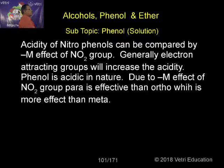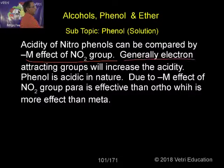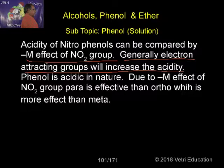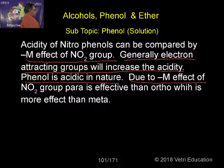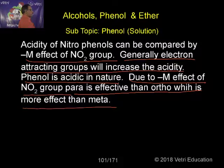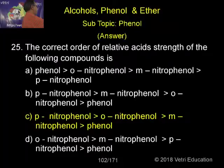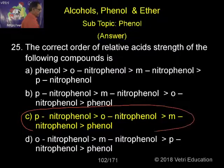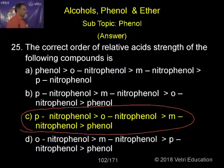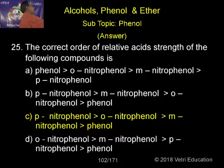The acidity of nitrophenol can be compared by the -M effect of the NO₂ group. Generally, electron-attracting groups will increase acidity. Para is more effective than ortho, which is more effective than meta. So the correct answer is C: para-nitrophenol greater than ortho-nitrophenol, greater than meta-nitrophenol, greater than phenol.